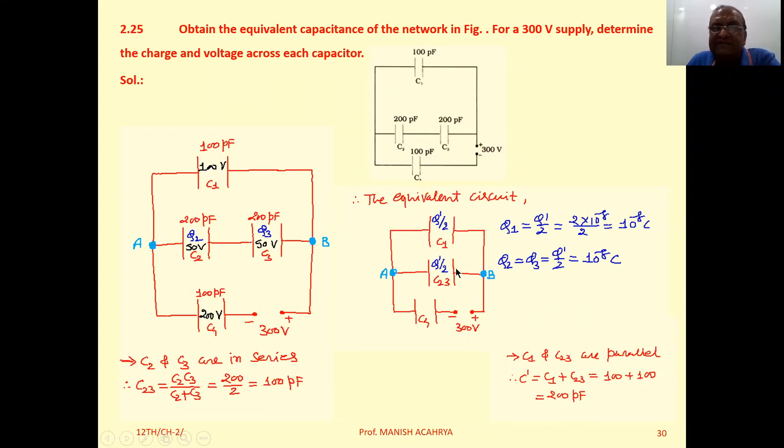This means we can replace this combination of C1 and C23 which are parallel by only one capacitor having capacitance C' equal to 200 pF.